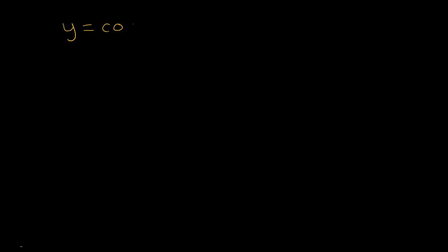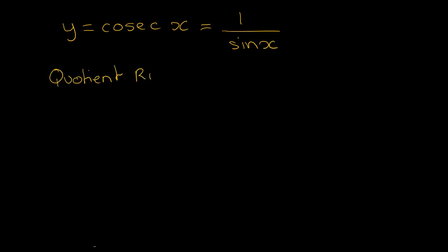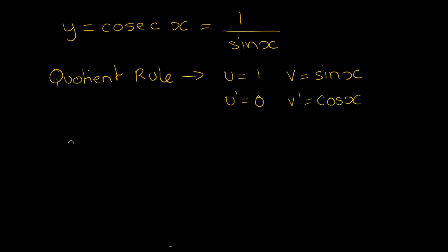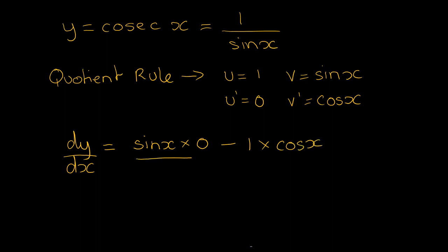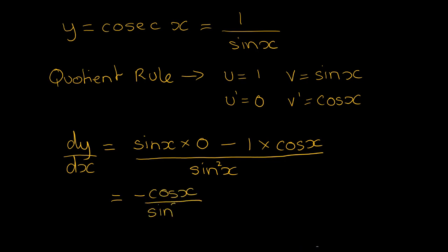We differentiate cosec x, which is the same as 1 over sine x, using the quotient rule with u equal to 1 and v equal to sine x. So du/dx is 0 and dv/dx is cos x. Therefore dy/dx is sine x times 0 minus 1 times cos x, all over sine squared x. Tidying this up, we get minus cos x over sine squared x.